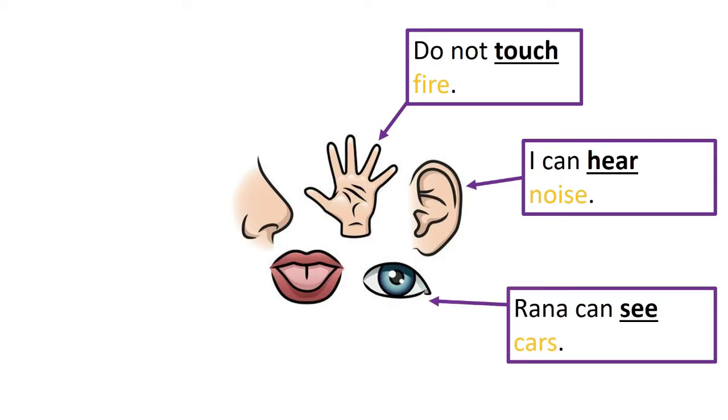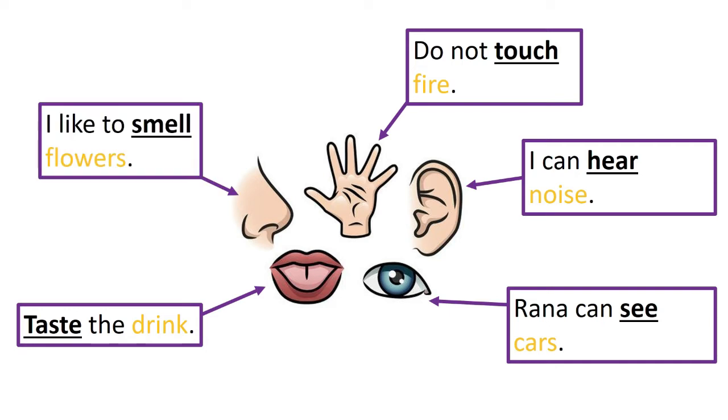Rana can see cars. Cars are nouns because you can see them. Taste the drink. A drink is a noun because you can taste it. I like to smell flowers. Flowers are also nouns because you can smell them.